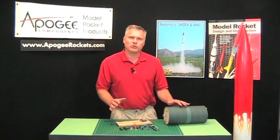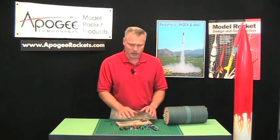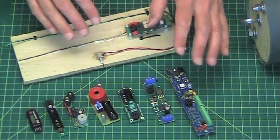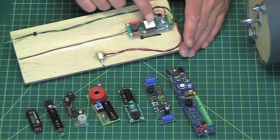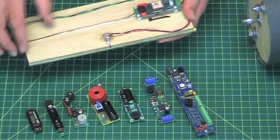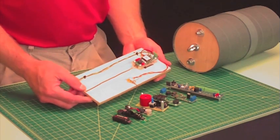In this video, we're going to show you how to mount things like altimeters, timers, beepers, dual deployments, and flight computers and the telemetrum GPS unit into an electronics bay. The heart of it is the sled which is what you see here.